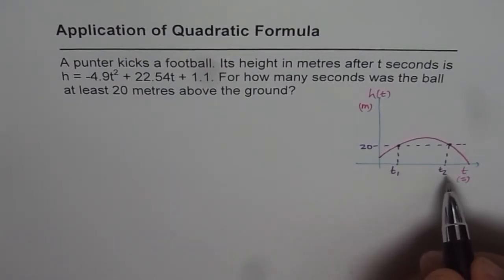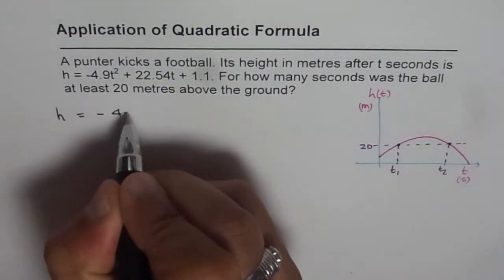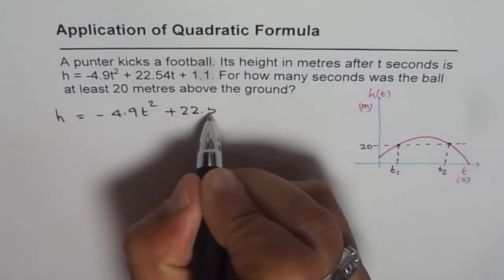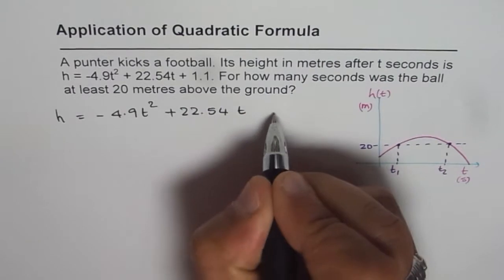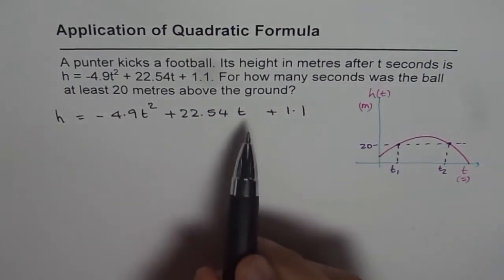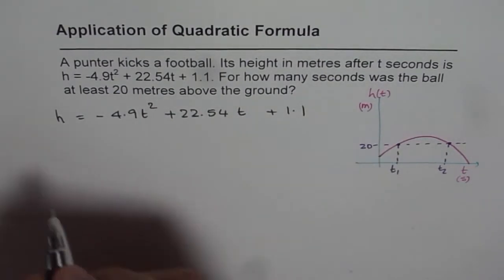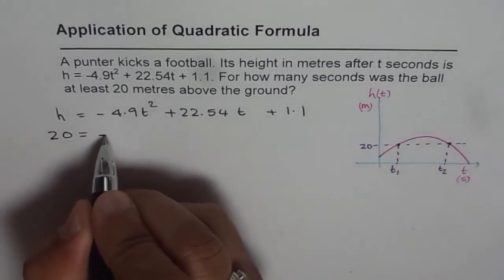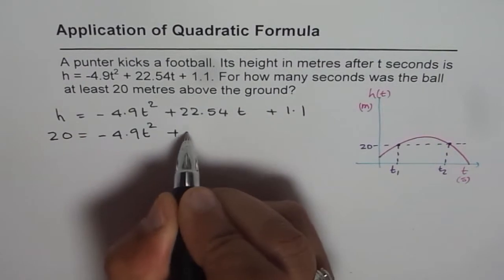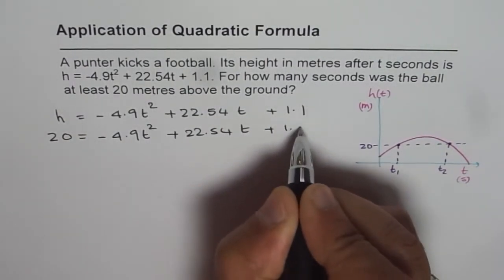Now we are already given the equation. The equation is h equals minus 4.9 t² plus 22.54 t plus 1.1. So if we find time when height is 20, that means we can replace h with 20, so we get 20 equals minus 4.9 t² plus 22.54 t plus 1.1.